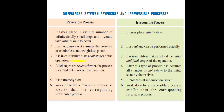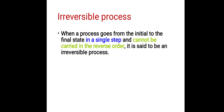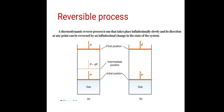Third difference: a reversible process is in an equilibrium state at all stages of the operation — equilibrium exists between every intermediate step. In an irreversible process, it is in an equilibrium state only at the initial and final stages. Equilibrium exists at the initial position and at the final position, but intermediate stages are not involved, so there is no equilibrium in between.